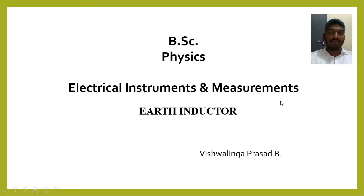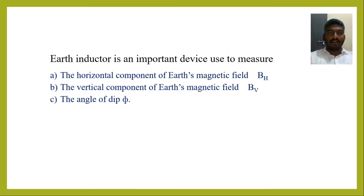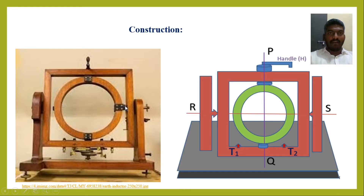In this session we are going to see what is an earth inductor, the construction of earth inductor, and the theory of earth inductor. Earth inductor is an important device which is used to measure the horizontal component of earth's magnetic field BH, the vertical component BV, and the angle of dip. This earth inductor works on the principle of electromagnetic induction. It generates an induced EMF by virtue of rotation of the coil in the earth's magnetic field.